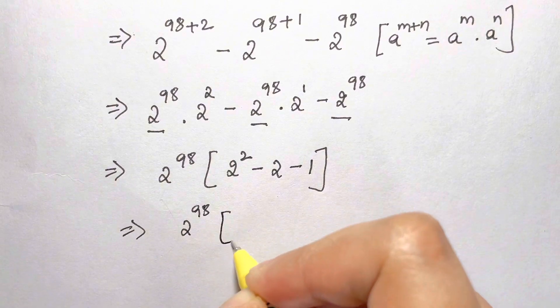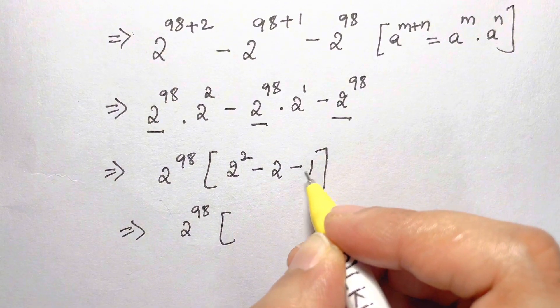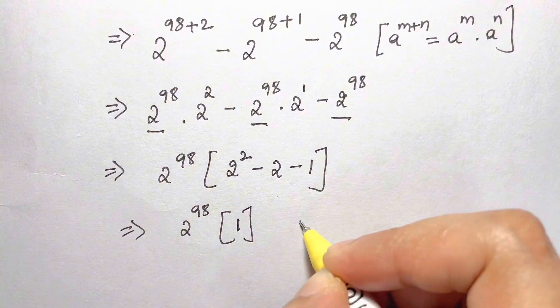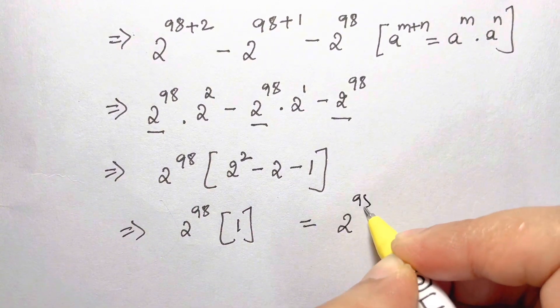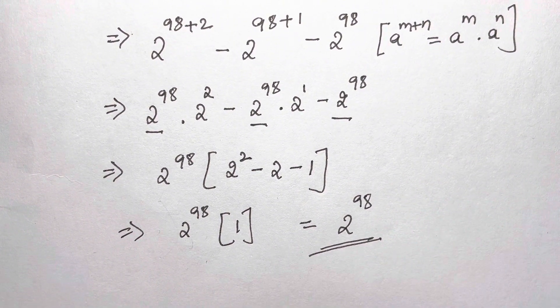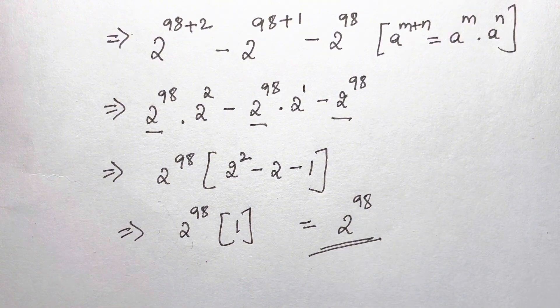4 minus 2 is 2, 2 minus 1 is 1. So your answer is 2 to the power of 98. How simple was that? Very simple steps. Thank you so much for watching, bye bye, take care.